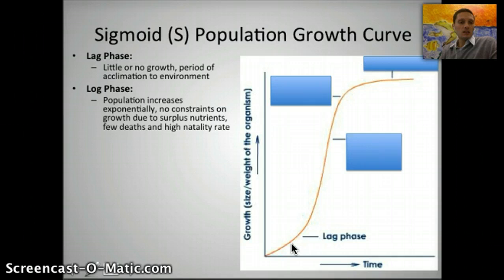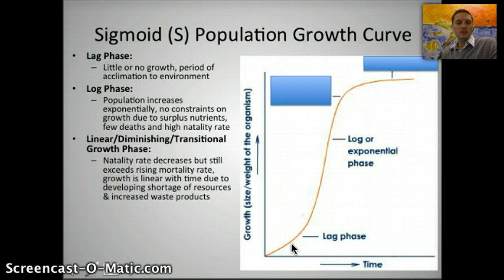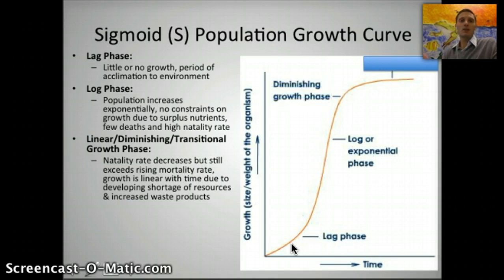In the second phase — the log phase — this is where we see a lot of growth, or an exponential increase in population size. The population is increasing rapidly, and there's lots of growth because there are really no limiting factors and no constraints to the population growing. The third phase is when that growth rate starts to decrease because the resources needed by that organism are starting to become constrained — there's more competition for them. This is the linear, diminishing, or transitional growth phase.